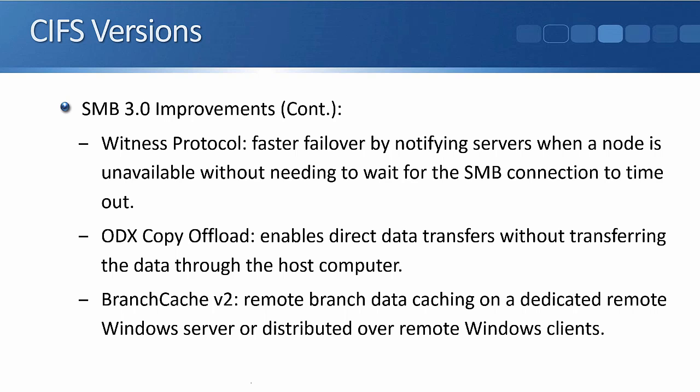SMB 3.0 also includes ODX copy offload, which enables direct data transfers without transferring data through the host computer. For example, if our NetApp system is in New York and we have clients in Washington, normally copying data from one folder to another on the NetApp system would send data from New York down to Washington and back. With ODX copy offload, it doesn't have to go over the WAN connection — it stays local in New York, giving us faster copies.